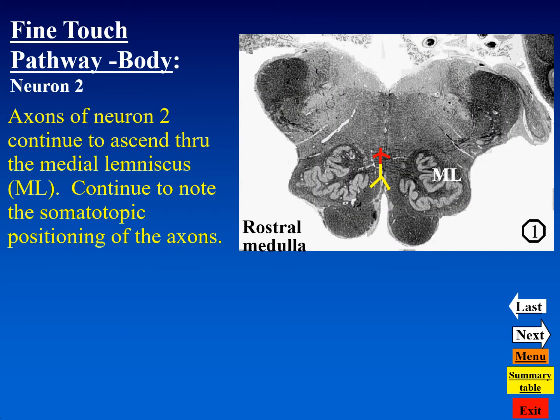Here in the rostral medulla we continue to see neuron two axons ascending in the medial lemniscus. These fibers are organized somatotopically so that upper limb fibers are most dorsal in the medial lemniscus and lower limb fibers are most ventrally positioned.